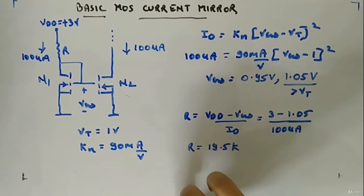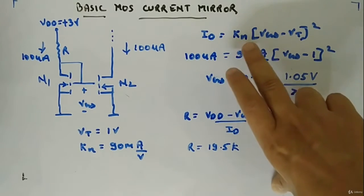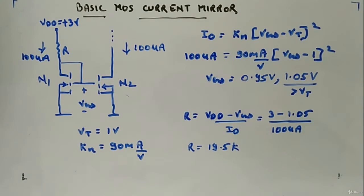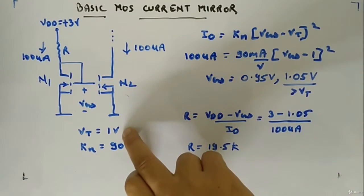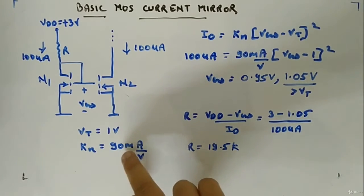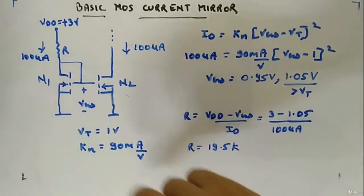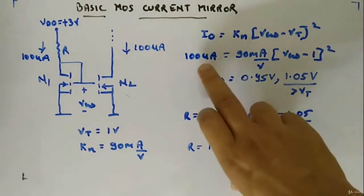Now you know the deal: saturation region ID is equal to KN times VGS minus VT whole square. We are taking VT value 1 volt and KN is equal to 90 milliampere per volt transconductance parameter and threshold voltage.